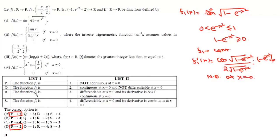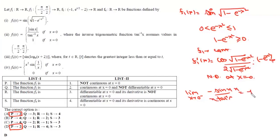Function f2 = |sin x| / tan⁻¹x, with value 1 when x = 0. The left-hand limit as x→0⁻ gives −sin x / tan⁻¹x → −1, while the right-hand limit gives sin x / tan⁻¹x → +1. Since the left-hand limit ≠ right-hand limit, this function is not continuous at x = 0. So Q matches with 1.